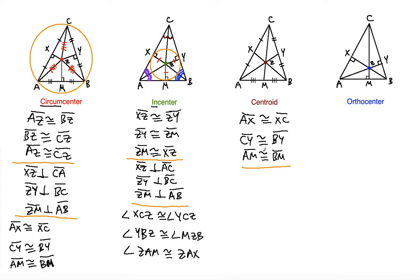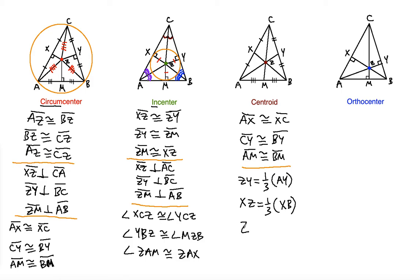What makes medians special is that the distance from the centroid to the midpoint is one-third the entire distance from the vertex to that midpoint. So ZY is one-third of AY, XZ is one-third of BX, and ZM is one-third of CM.